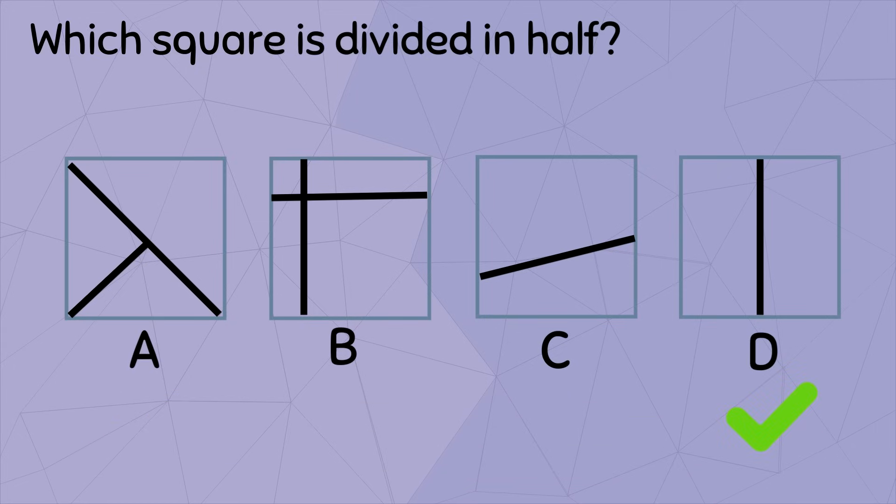That's right! It's square D. Both square A and B are not divided into two parts. Square C is divided into two parts, but the parts are not equal.